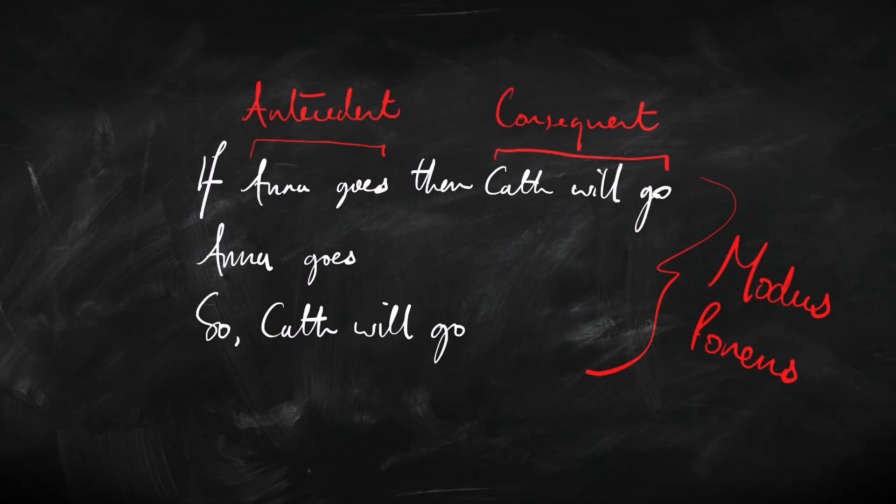Let's go back to this argument: 'If Anna goes then Kath will go. Anna goes, therefore Kath will go.' Suppose you're really resistant to the idea that Kath's going to go to the party — you might psychologically feel that is a bad argument. But it's not a bad argument; it's a good argument. It's a logically valid argument — one of the simplest logically valid arguments there are. It's an instance of modus ponens. We have to separate the logical structure of the argument, which says it's valid, from whether we like or dislike the conclusion.